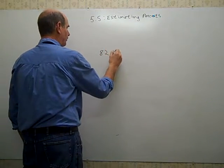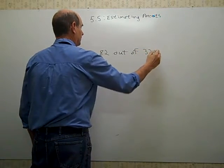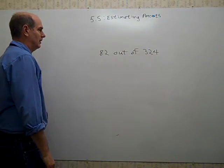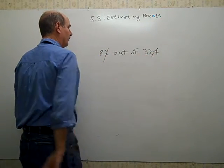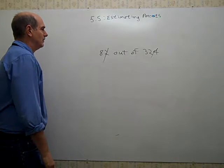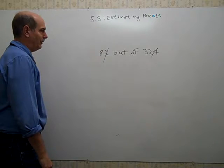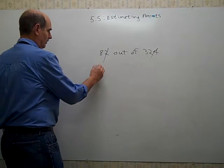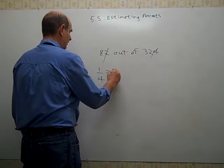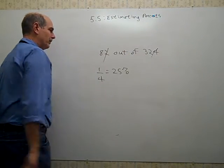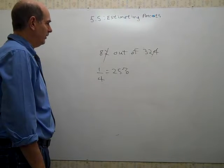What about 82 out of 324? What percent would that be? Yeah, let's just say, knock that 2 off, knock that 4 off, and we've got 8 out of 32. 80 out of 320 is the same as 8 out of 32. 8 out of 32 reduces to 1 fourth. Got that memorized? Sure you do. 25%. It's not exactly 25%, but that's not the goal. We're just trying to estimate what 82 out of 324 would be.